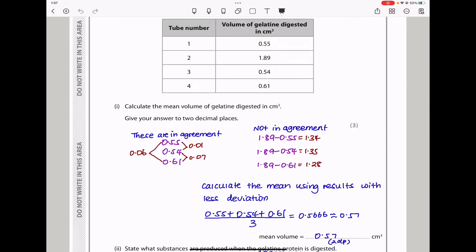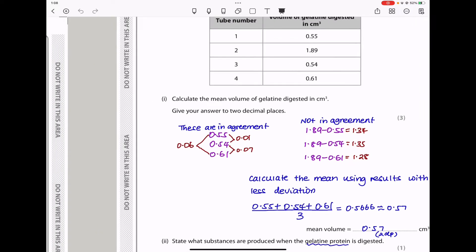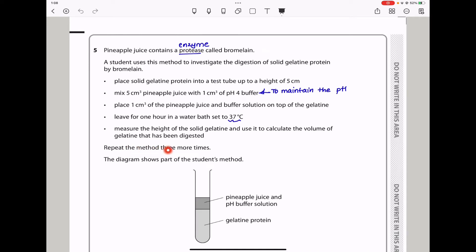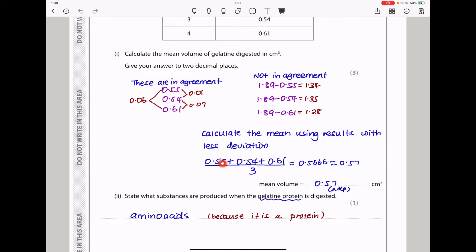However, when I use number one, number three, and number four, the differences are really small. And those results could be agreeable or they are in agreement. So I use those to calculate the mean. And at the start of the question, they said repeat the method three more times. So I'm going to use the three results that do agree. So using 0.55, 0.54, and 0.61 to calculate the mean, since they are three values, I had to divide by three. And my answer was 0.57 to two decimal points.